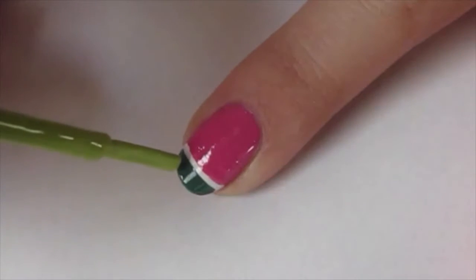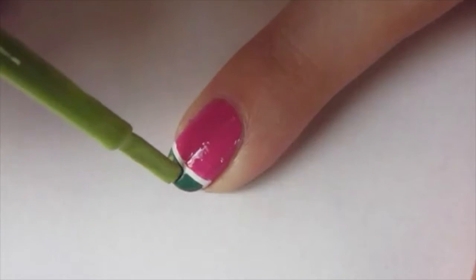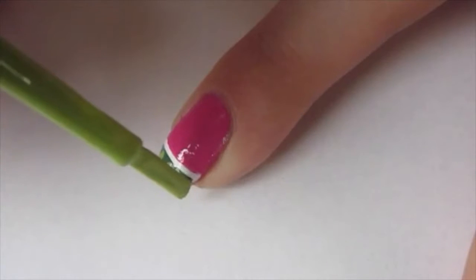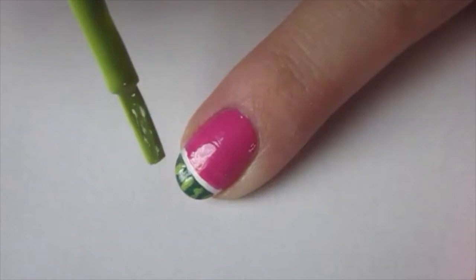Then using a light green polish, I went in with a dry brush. Make sure to really wipe off most of the polish on the neck of the bottle, and we're just creating some vertical lines here. We really want them to look sloppy.